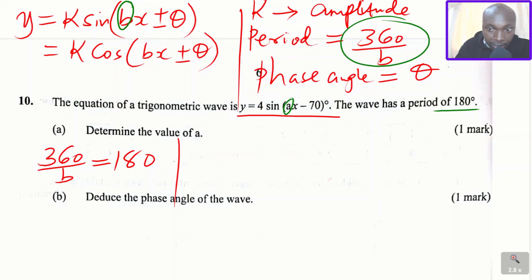y equals 4 sine ax minus 70, A in this equation is equivalent to b. So we shall use A since in this equation it is indicated by letter A. A is equivalent to b in that equation. So to get A, you get 360 divided by A equals 180. And when you work out these, 180A equals 360, and A will be 2.